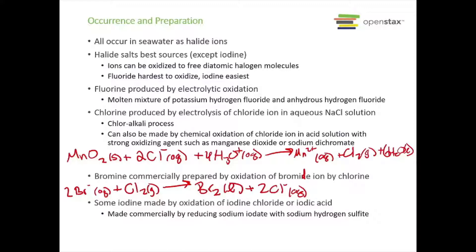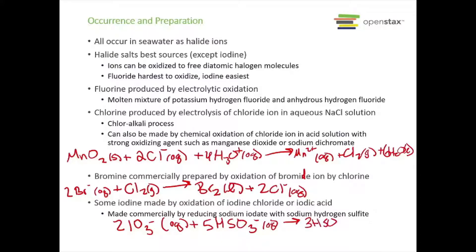Iodine can be made by oxidation of iodine chloride or iodic acid. Commercially it tends to be made by reducing sodium iodate with sodium hydrogen sulfite. Looking at the ionic equation: the iodate ion IO₃⁻ is reacted with the hydrogen sulfite ion HSO₃⁻, and these react to give us HSO₄⁻, hydrogen sulfate, as well as regular sulfate SO₄²⁻, water, and finally iodine, I₂.